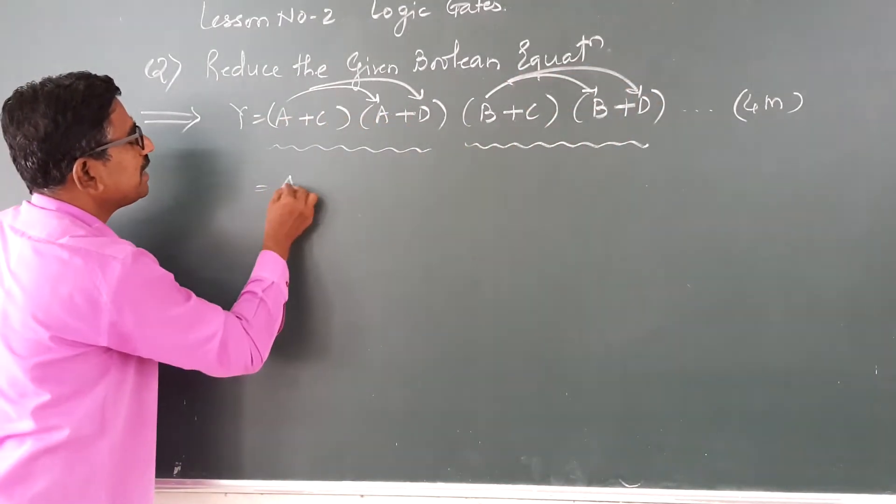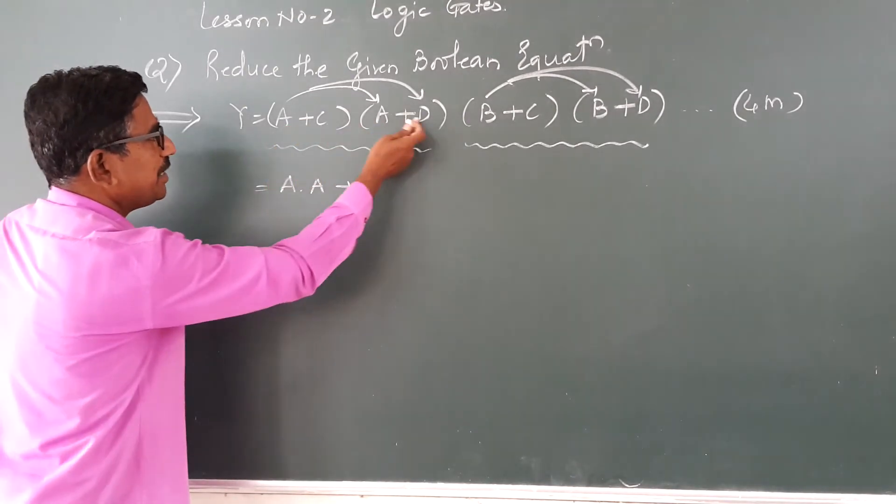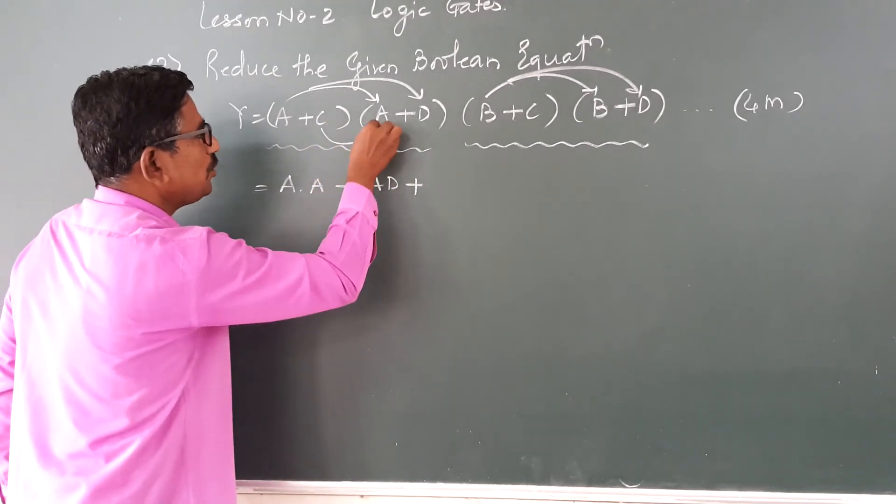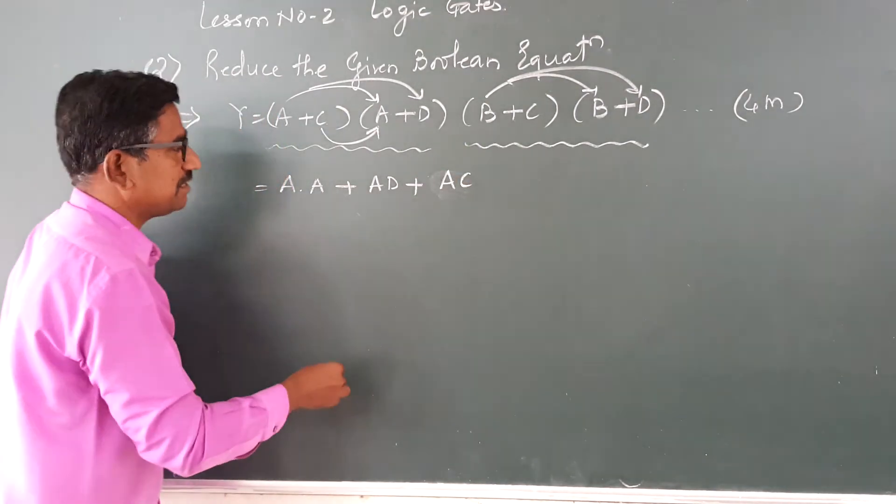What will be my next expression? a into a, a·a, a into b that is ab, plus c into a that will be ca, or you can also write a·c.